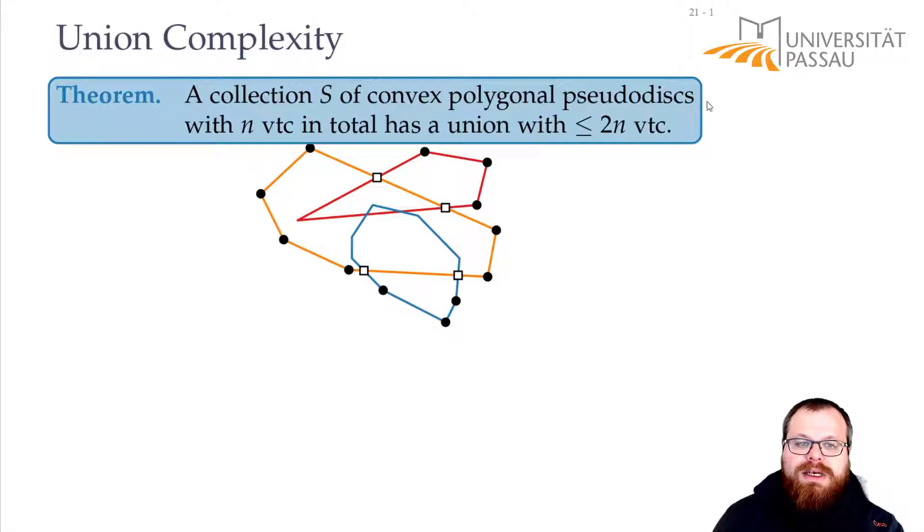How do we prove this? We want to charge every vertex of a union to a polygon vertex, such that every polygon vertex is charged at most twice.